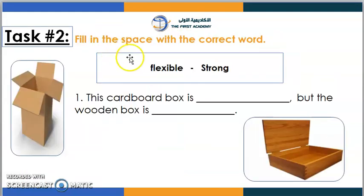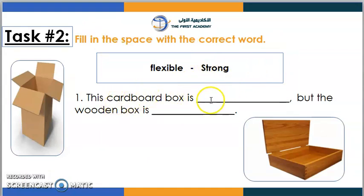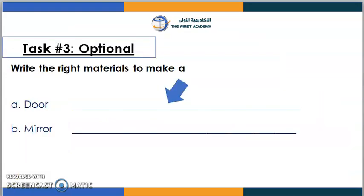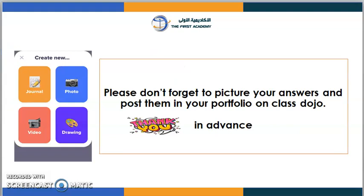Task Number Two: there are some words in a box. I want you to read carefully and then try to find the missing word. Task Number Three: write the right materials to make the following objects — you have two objects here. Finally, please don't forget to take a picture of your answers and post them in your portfolio on Class Dojo.